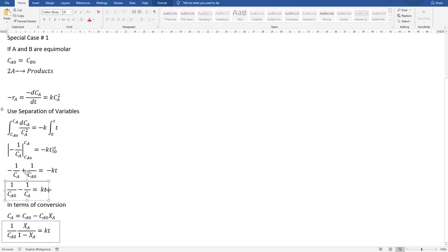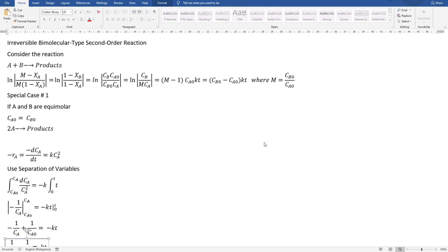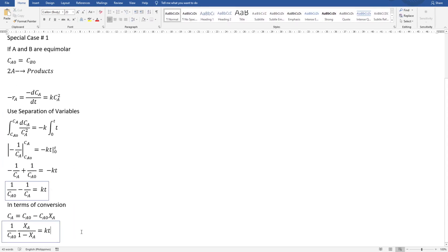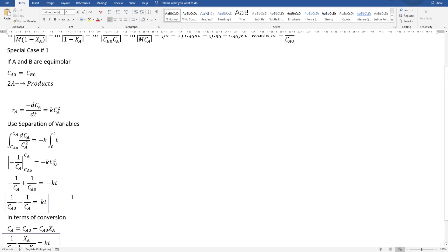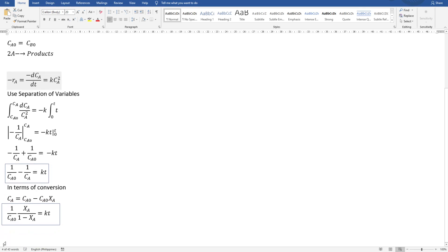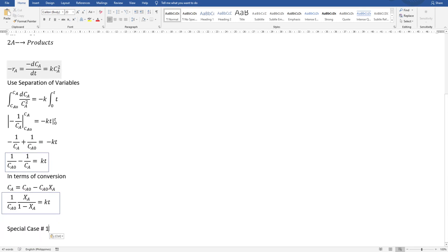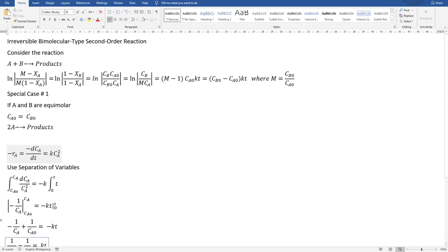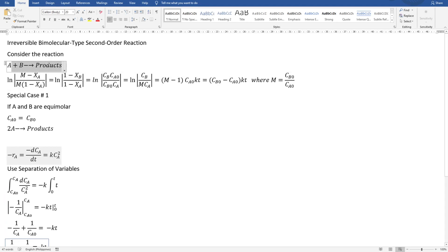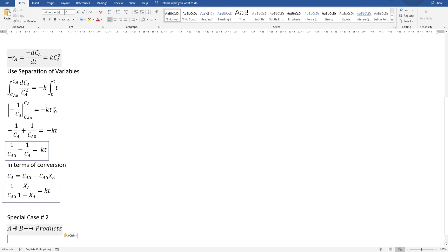There is also special case number 2, where our chemical reaction is like this: A plus 2B forming products.